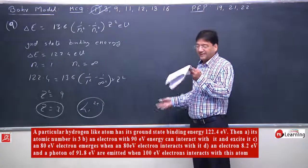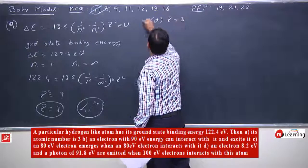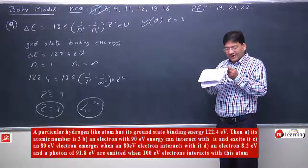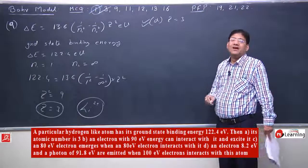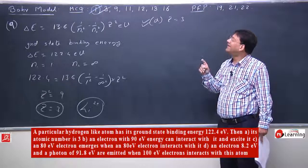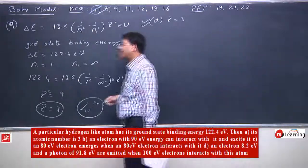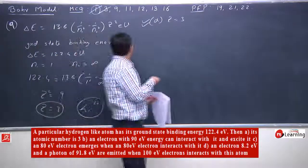Its atomic number is 3. This is absolutely correct, z equals 3. This is correct statement. An electron with 19 eV energy can interact with it and excite it. Let me calculate what energy is needed to excite it.